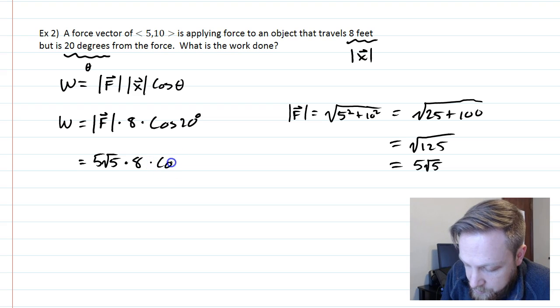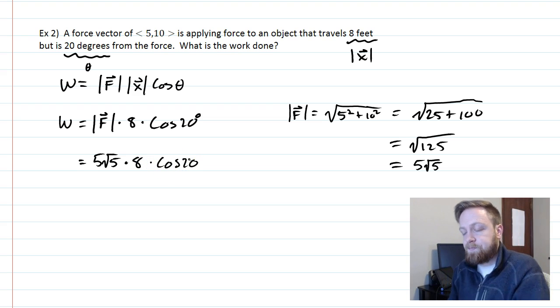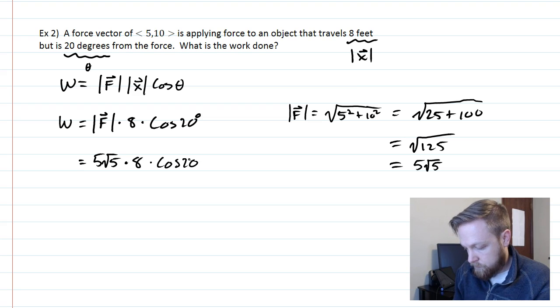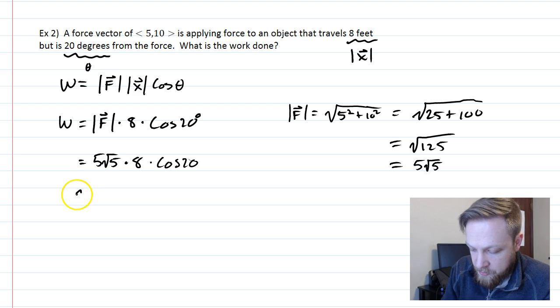Times 8 times the cosine of 20. And that comes out to be approximately 84 foot-pounds.